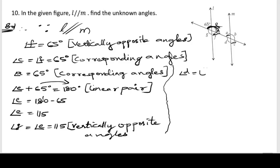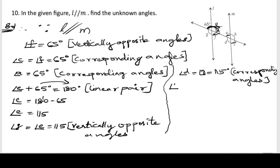Angle G is 115 degrees. Next, considering angles E and B — corresponding angles are equal — so angle B equals angle E, which is 115 degrees. These are also corresponding angles.